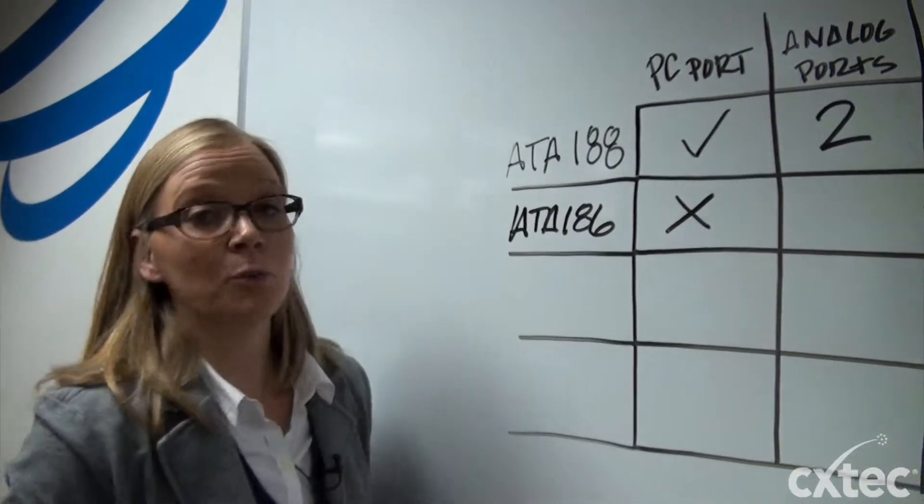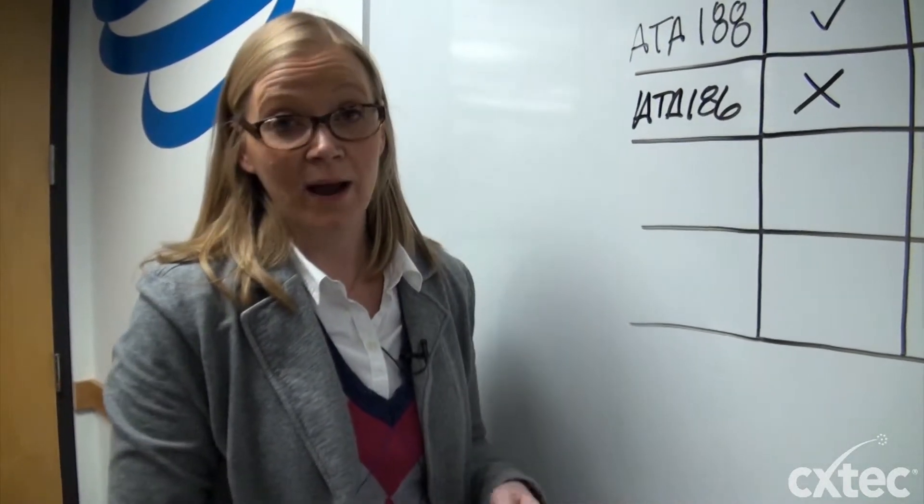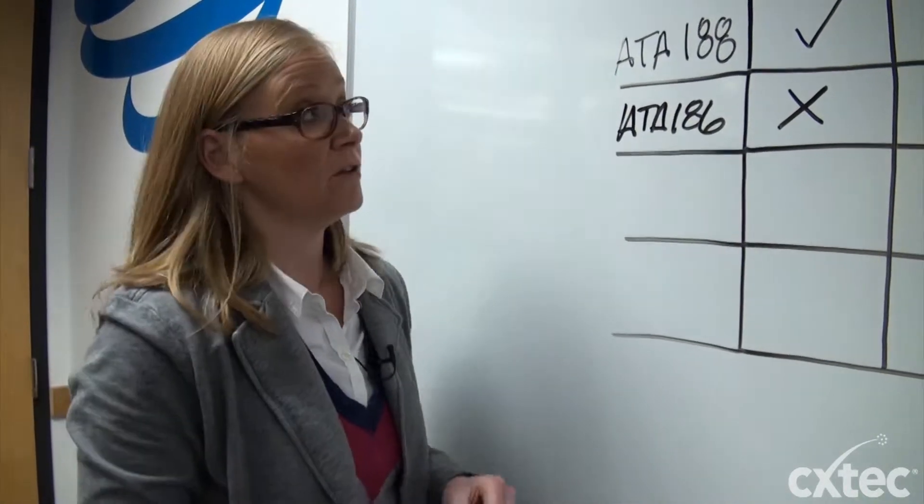So what happened with the ATA 186 that changed from the 188 is that Cisco actually removed the support for a PC port. They did not think it was a good idea for you to be able to add a PC onto your IP network and not be able to manage that device.